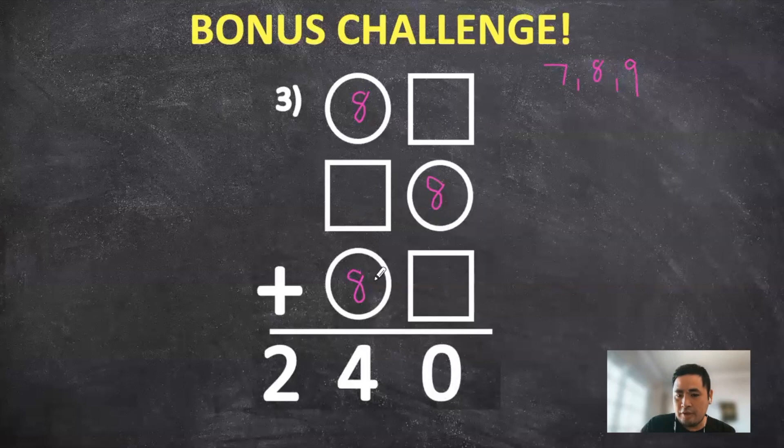But if a 1 went in here, the answer would be too small. So if we go up a little bit and think a little bit more creatively, we can put a 6 in for the squares.